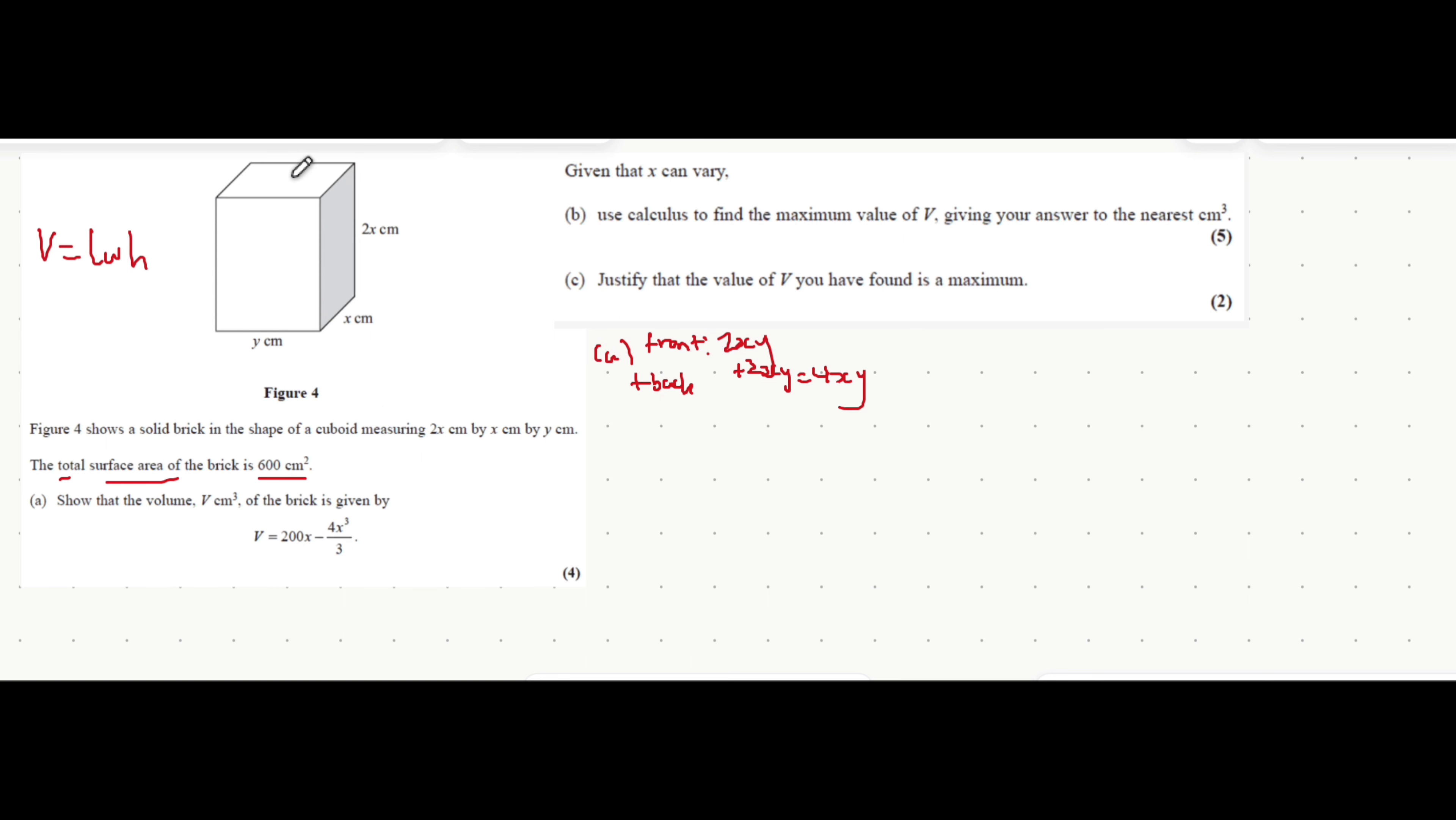Moving on to the top and bottom which are also the same. Let's first focus on finding the area of the top face. This length here is y, this length is x. The top and bottom are both xy for the area because x times y gives you the area of that rectangle. For both top and bottom we say it's 2xy.